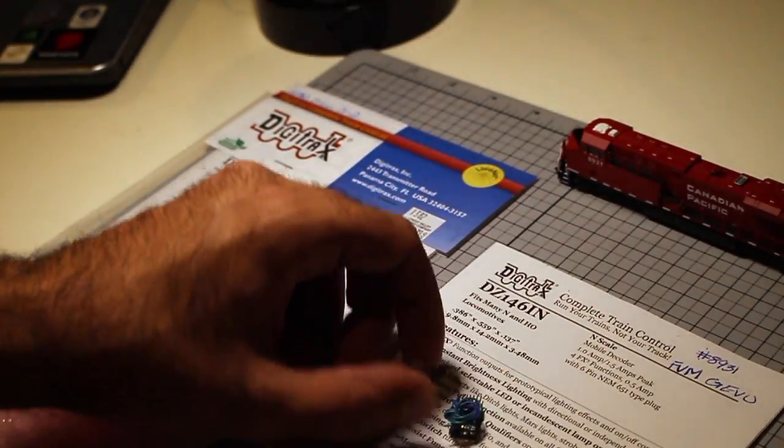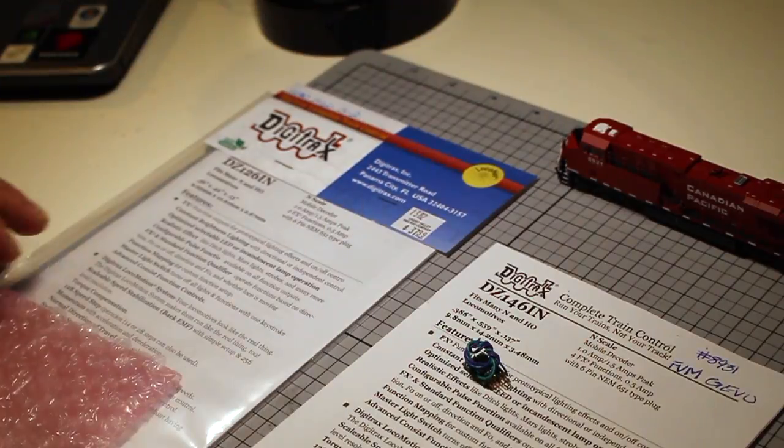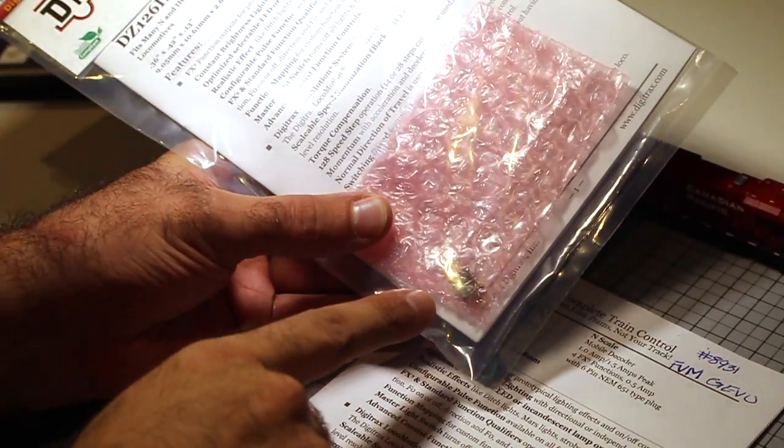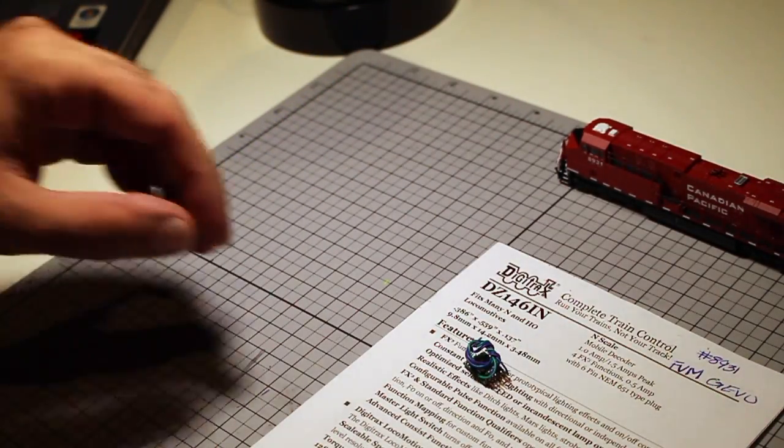The reason why I'm going with this one is because it has two extra functions. You can wire up the ditch lights to have alternating ditch lights. This one here does not have that, it just has the board, so it's just plug-and-play. So let's get it going.